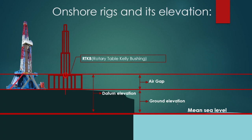For example, if our ground is 9 feet above Mean Sea Level, and the elevation of our rig floor is 10 feet above ground, then the datum elevation is 19 feet — approximately 19.5 feet — above Mean Sea Level. This is how it works for onshore rigs.